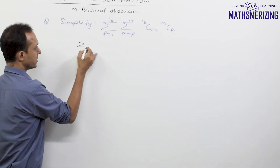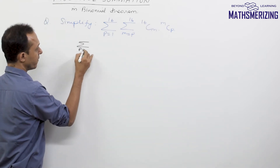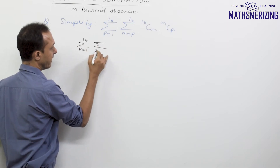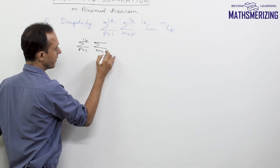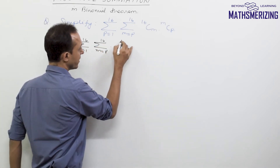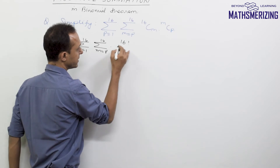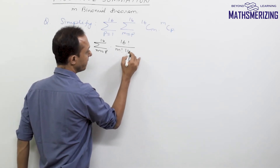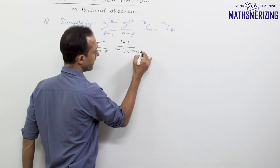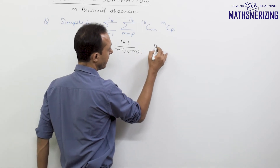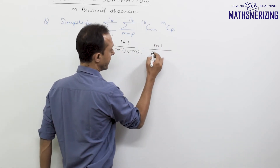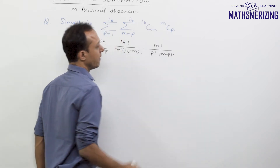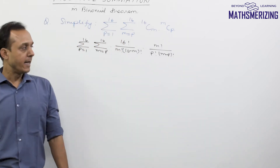I will write it as summation p varies from 1 to 16 and summation m varies from p to 16. So I will write factorial 16, factorial m, and then factorial 16 minus m, and here will be factorial m, factorial p, and then it will be factorial m minus p.